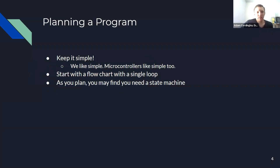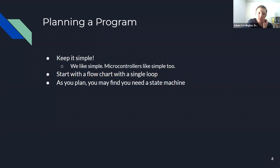The one thing to keep in mind with planning your program is to keep it simple. Sometimes you can't avoid complexity, but as much as possible simplicity is nice. When you're trying to think about the behavior of your program, you want to start with a flow chart and a single loop, and as you plan you may find you need perhaps a state machine, which is another block as we will see.